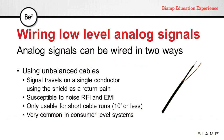Analog audio signals can be wired in two different ways: using balanced connections and unbalanced connections. On unbalanced cables, signal travels on a single conductor, using the shield as a return path. These cables are susceptible to radio frequency interference and electromagnetic interference, and they should be used only for short cable runs, usually 10 feet or less. These cables are very common in consumer-level systems.